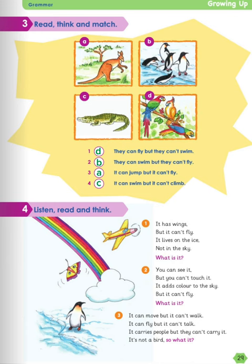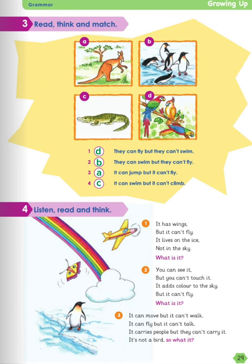Now number 4, listen, read, and think. Riddle 1: it has wings, but it can't fly. It lives on the ice, not in the sky. What is it? Correct — they are penguins. Number 2: you can see it, but you can't touch it. It adds color to the sky, but it can't fly. What is it? Correct — it's the rainbow. Number 3: it can move, but it can't walk. It can fly, but it can't talk. It carries people, but they can't carry it. It's not a bird. What is it? Yes — it's a plane.